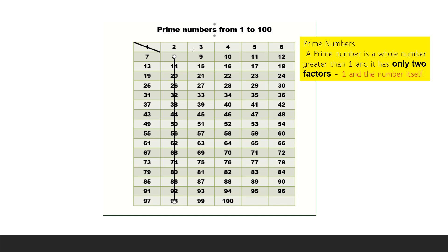Next, the third column: we have 3. 3 is a prime number because the factors of 3 are 1 and 3 — only 2 factors. So 3 is a prime number. Leave 3 and check the other numbers: 9 is a multiple of 3, 15 is a multiple of 3, 21 is a multiple of 3. All third-column numbers are multiples of 3. Multiples can't be prime numbers, so cross out all the numbers in the third column.